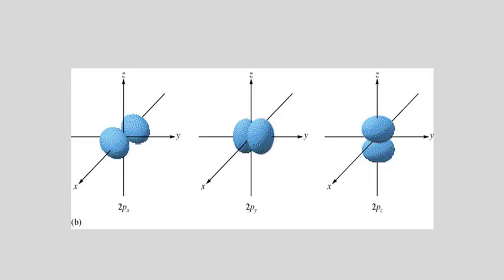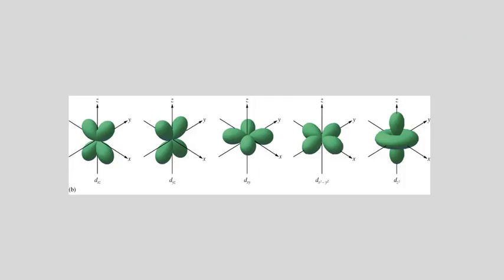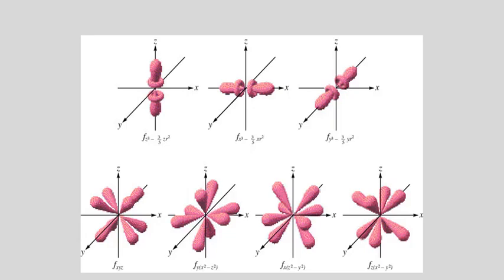The S subshell has one spherical orbital. The P subshell gives you dumbbell-shaped orbitals and there are three of them. The D subshell is mostly clover-shaped, but some look like a double-headed pacifier. Then you have the F subshell orbitals — some are daisy-shaped, and then you have these strange pacifier-looking shapes in three planes.